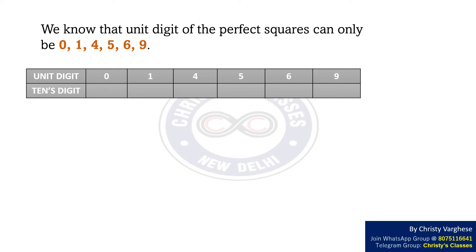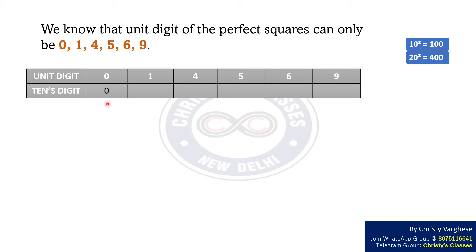For that, we are going to consider some examples. First, consider the case when the unit digit is 0. Consider 10² = 100 and 20² = 400. In both these cases, the unit digit is 0, and we can see that the tenth digit is also 0. Therefore, here the tenth digit is 0.